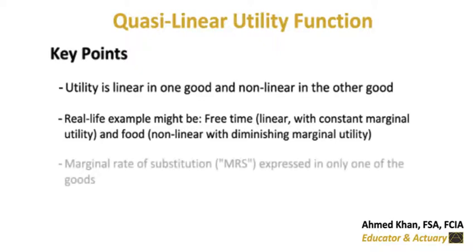The equation of the marginal rate of substitution, the MRS, has only one of the goods expressed in it, not both. This means that the impact on utility is fixed in terms of one good, but the impact on utility is changing in terms of the other good. A consequence of all of this is that the indifference curves are parallel.